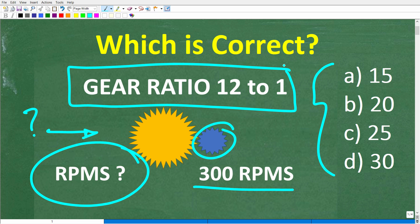Let's take a look at our answers. A is 15, B is 20, C is 25, and D is 30.